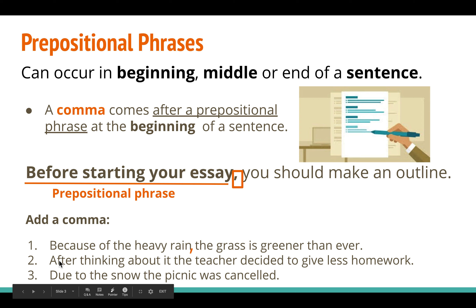Number two: 'After thinking about it, [comma].' Here we can see a pronoun as the object. And notice that here we actually have two prepositional phrases: 'after thinking' and 'about it.' So the whole prepositional phrase is 'after thinking about it, [comma].'